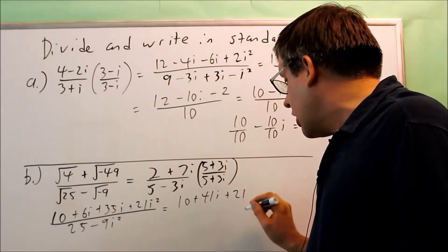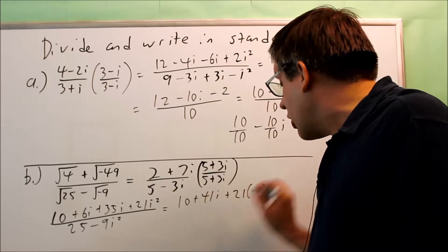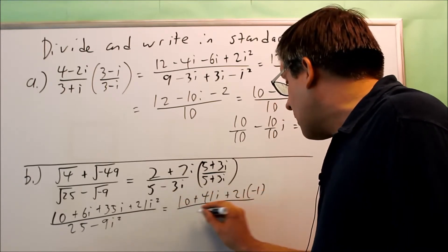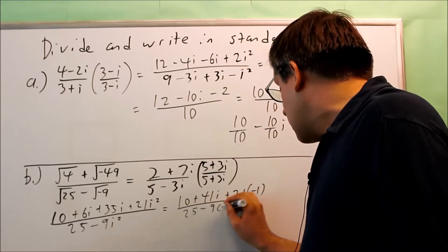We have here 10 and then plus 41i. And then 21, we're going to replace the i squared with negative 1. We're going to do that on the top and on the bottom. So I get this.